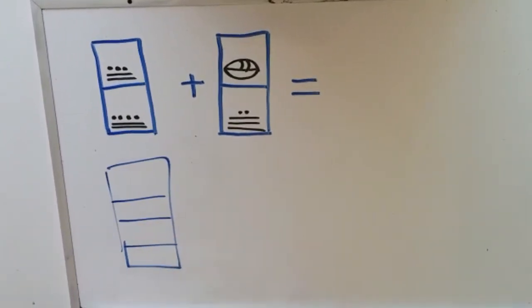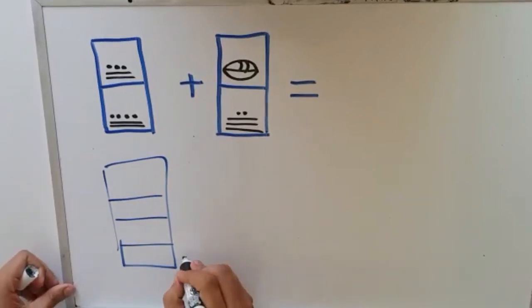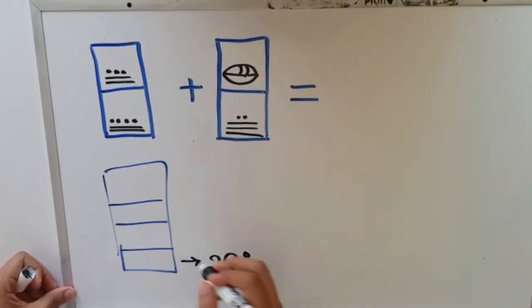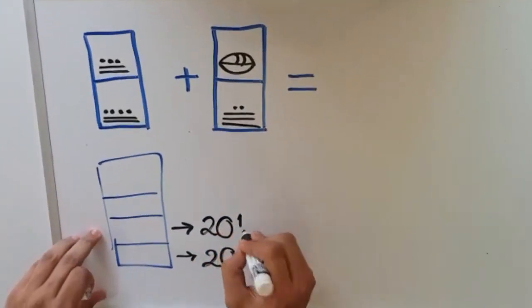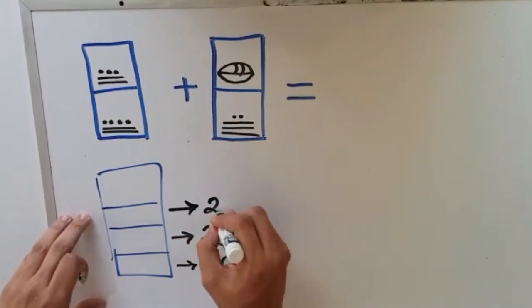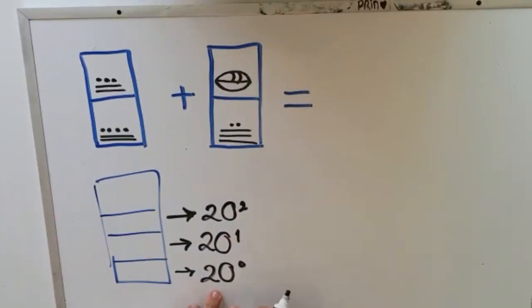We have a symbol here. The first level is elevated to the power of 20 to the zero. The second level is 20 to the power of 1, 20 to the power of 2, and so on.